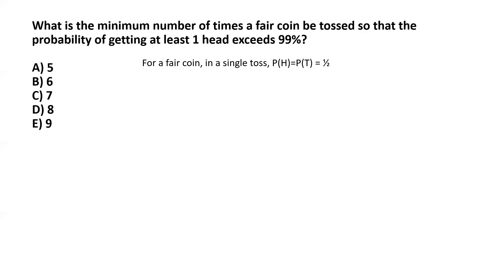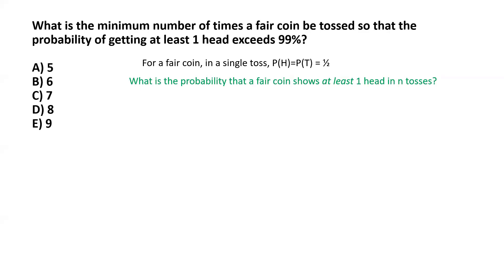In order to solve this problem, we have to ask the question: what is the probability that a fair coin shows at least one head in n tosses? Whenever we have to find the probability that at least one event occurs — in this case it's one head — it's almost always easier to answer the complementary question, or find the probability of the complementary event.